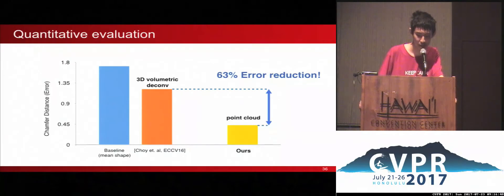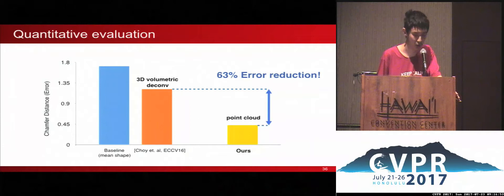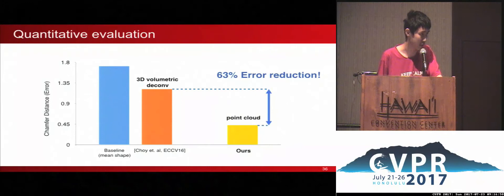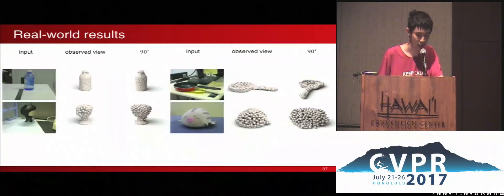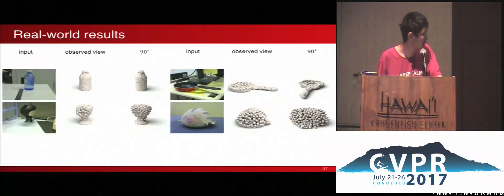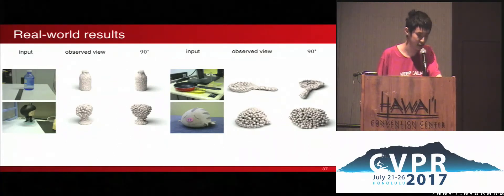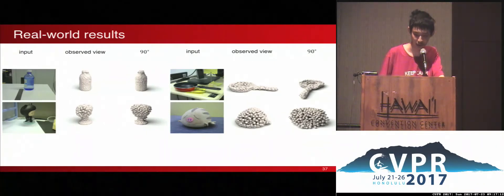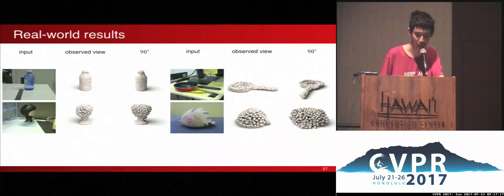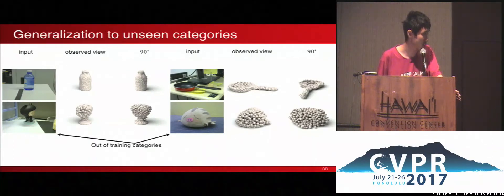We measure the performance of our algorithm quantitatively, and compared to previous work — specifically 3D-R2N2 from ECCV 2016 — the error is reduced by a large amount. Here are some qualitative examples. These photos were taken 6 hours before the CVPR submission deadline, so hopefully we didn't have too much time to cheat. The raw structures of the objects are captured well. For toys, which are completely outside the training categories, the network still produces reasonable output.